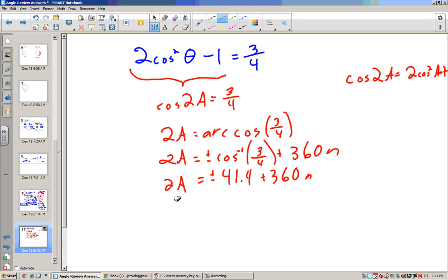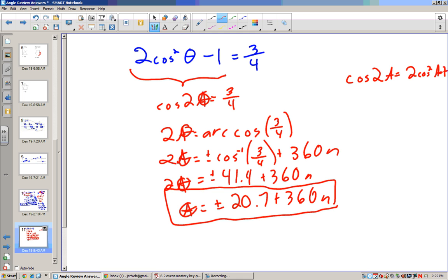Now I divide each side by 2. So positive and negative 20.7 plus 360 n. I don't know why I turned this to a's, because these should all be thetas. But once I have my thetas, now that would be the general equation.